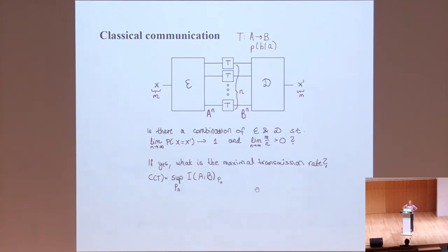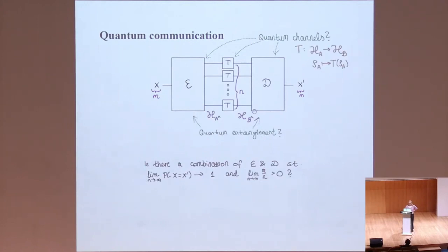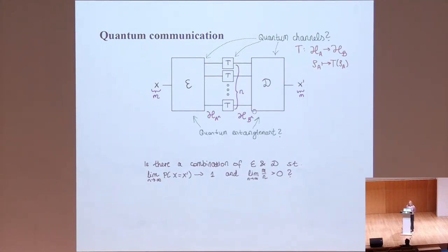In principle, this is an optimization problem over encoders and decoders. But it turns out, as Shannon found out in the 1940s, that there's actually a really nice entropic quantity — the mutual information — that characterizes this. Instead of having a complicated optimization problem, you have an easier one that tells you that how your wire transmits information mainly depends on the probability distributions associated to the message and how the wire corrupts it.